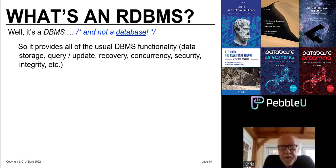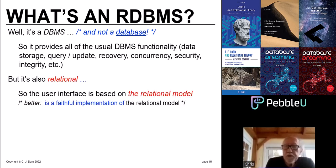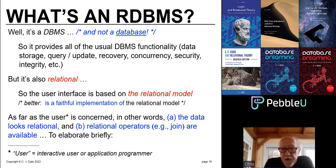So a relational DBMS is a DBMS, giving us all the usual DBMS stuff: data storage, query, update, recovery, concurrency, security, integrity, and all those good things. But it's also relational, which means the user interface is based on the relational model — or better said, it's a faithful implementation of the relational model. As far as the user is concerned, two things: first, the data looks relational; second, relational operators such as join are available to operate on that data.